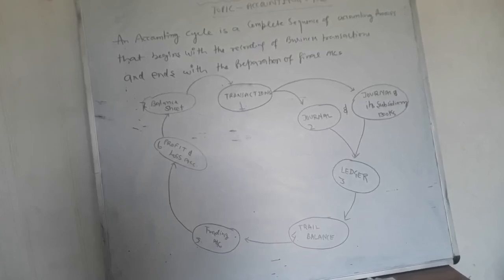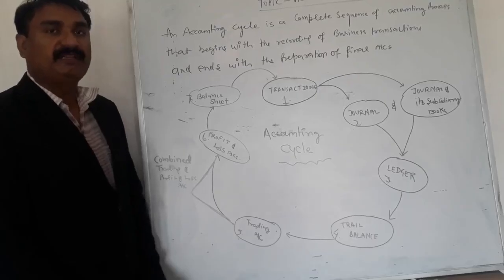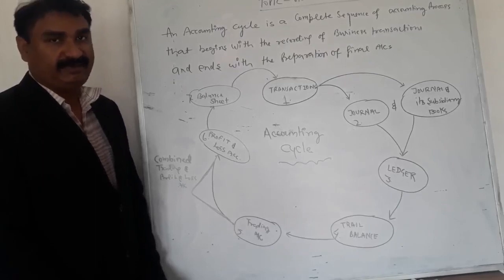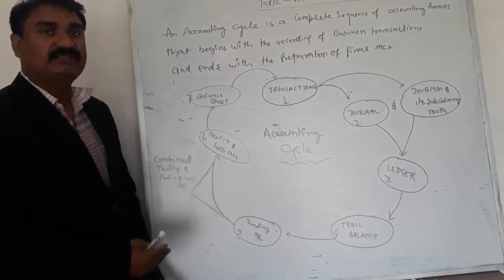After that we have to go for the seventh step. This is known as balance sheet. Balance sheet is a statement which is helpful to know the financial position of the business. After preparing the balance sheet it ends, and in the next year it also starts with the new transactions of business.